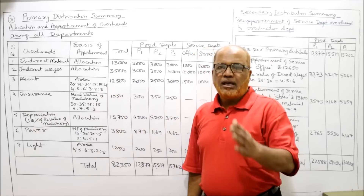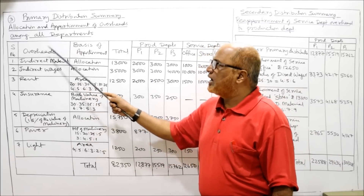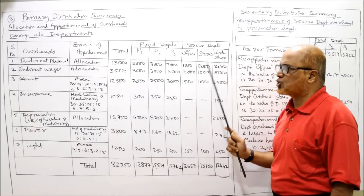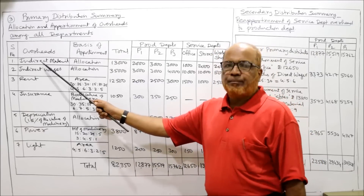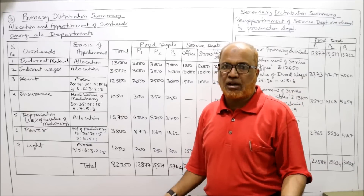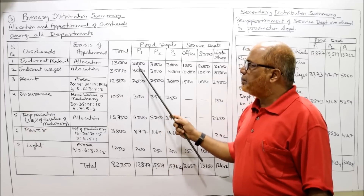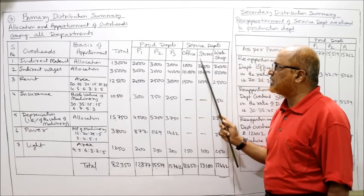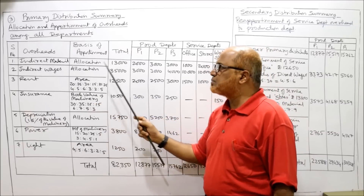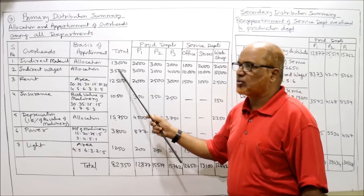The primary distribution summary shows allocation and apportionment of overheads among all departments: P1, P2, P3, Office, Stores, Workshop — six departments total. Columns are: serial number, overheads, basis of apportionment, total, then each department. First item: indirect material — allocation, because it is specifically given: P1 2,000, P2 3,000, P3 3,000, Office 1,000, Stores 2,000, Workshop 2,000 — total 13,000. Indirect wages — allocation, specifically given for all departments — total 35,000.